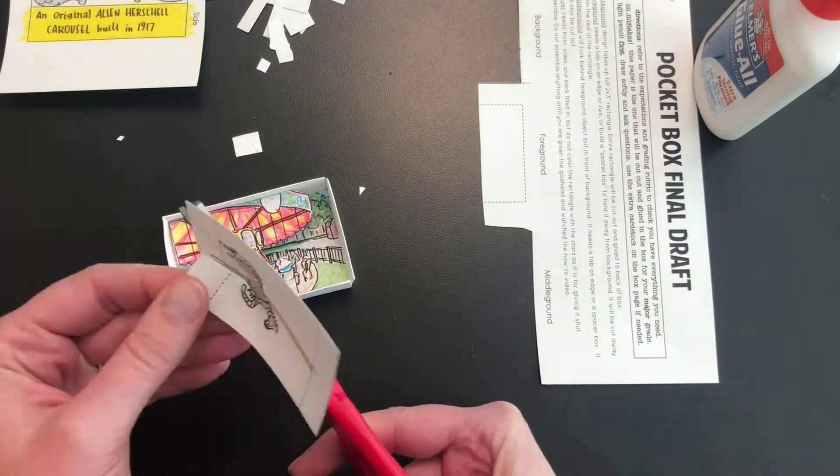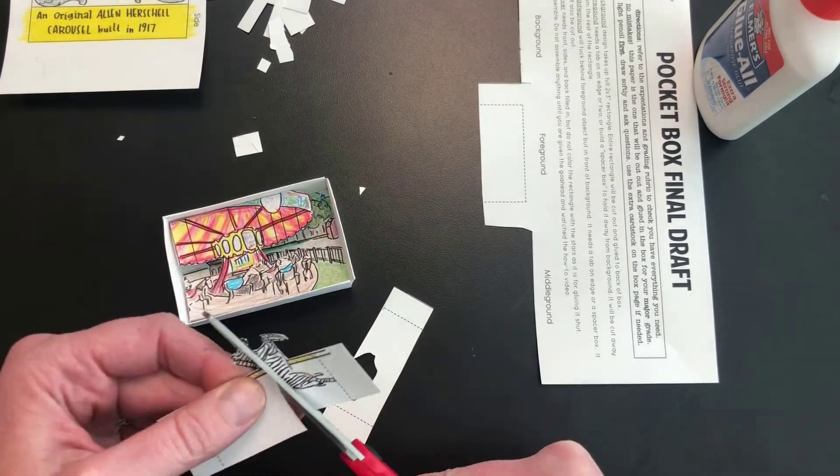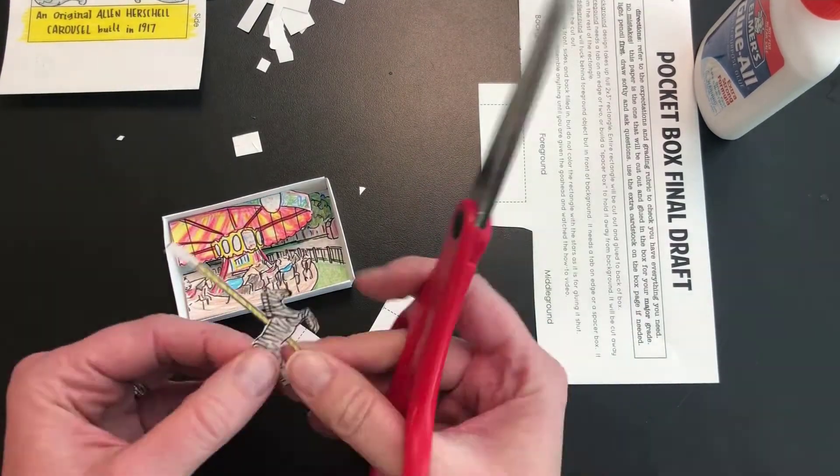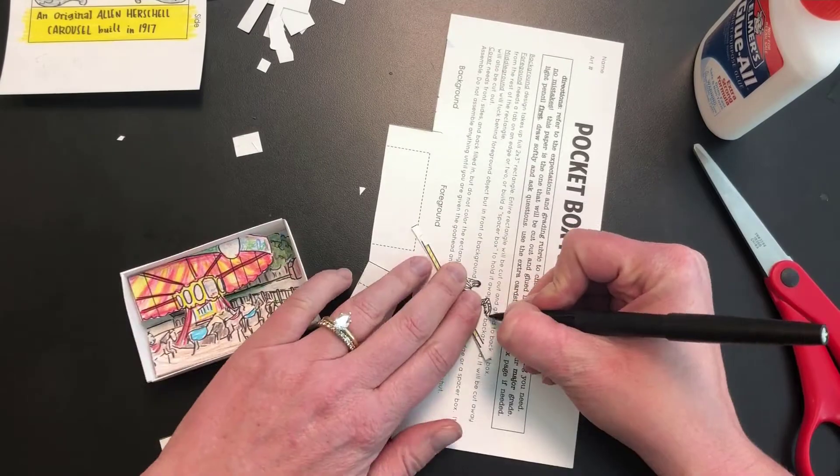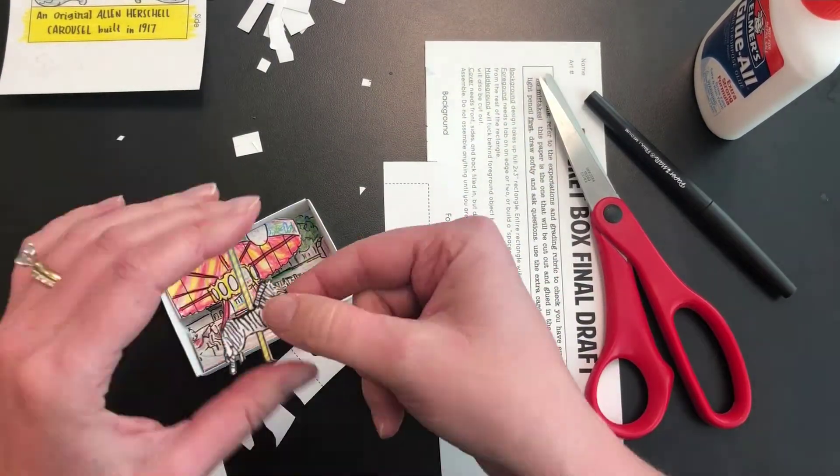My foreground object will also be cut away, and a combination of tabs and spacer boxes will help that float and be the topmost layer. I use my pen to go back and clean up anything that needs to be blackened after cutting.